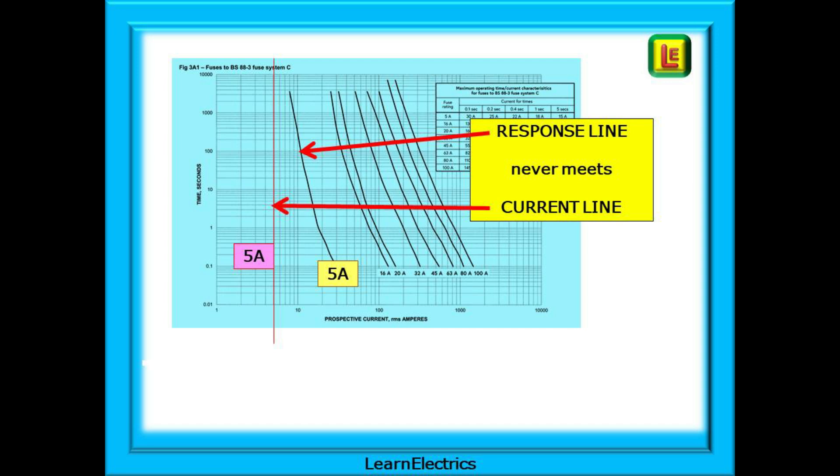The curved lines are called response lines or response curves. They show how the fuse responds to currents of a certain size. These are the standards to which the fuse makers must work. The vertical lines are the fault current and the fuse will blow when the fault current line and the response line cross each other. Where they cross is shown in seconds on the left of the chart. Here we have highlighted the response curve for a 5 amp fuse and the red vertical line for 5 amps of fault current. As you can see they never meet. The fuse will not blow. 5 amps will not blow a 5 amp fuse.